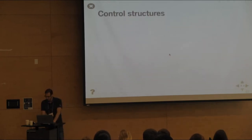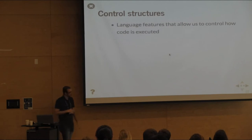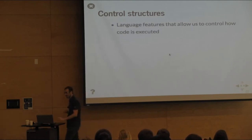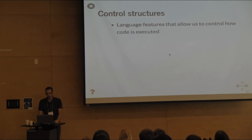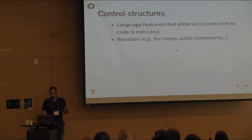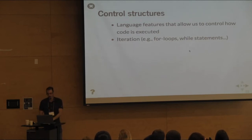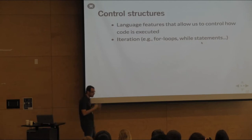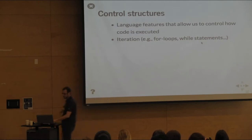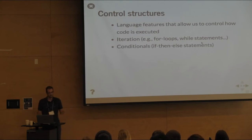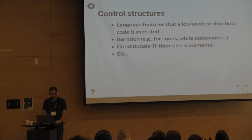Let's breeze through control structures. These will look more or less the same if you've programmed in any other language. Control structures allow us to control how code is executed — things like for loops and while statements for iteration, and if-then-else conditionals.